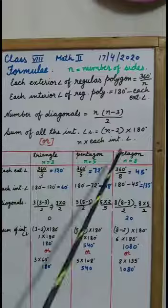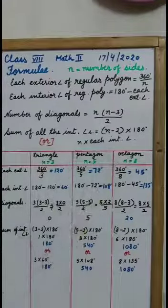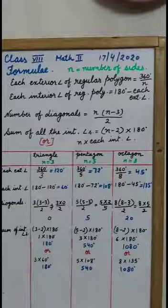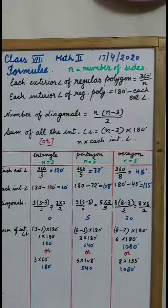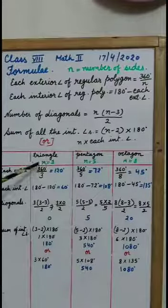I have taken these examples: triangle, pentagon and octagon. Before finding any angle or sum of angles, we will find number of sides first.